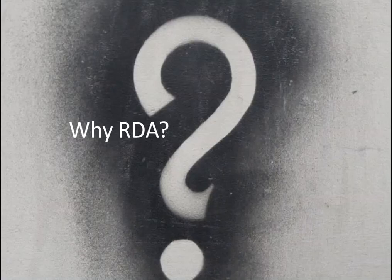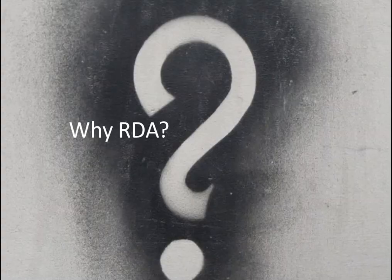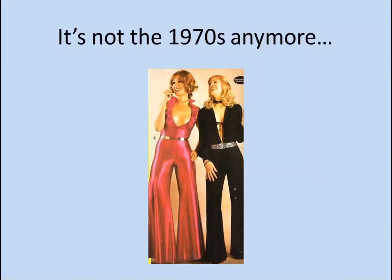So why exactly are we using the FRBR model and making this change? My short answer is: it's not the 1970s anymore. AACR2 was published in 1978, which is before I was born, and it was outdated in a lot of ways. Our clothes have changed since the 1970s, and our libraries have changed, and AACR2 just really wasn't reflecting our needs very well.